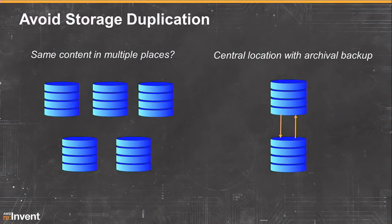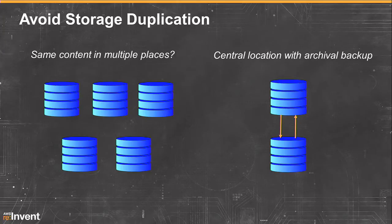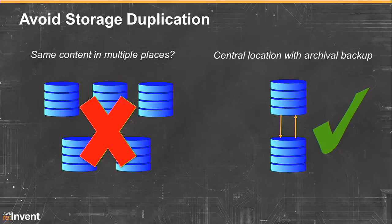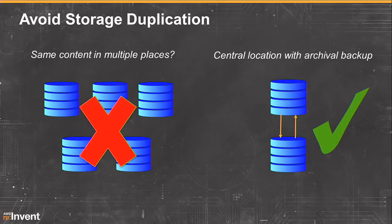A second best practice is to avoid storage duplication if you can. There are great storage sessions here at re:Invent, but if you look at what you can do with S3 and Glacier — using S3 as a central storage location and Glacier for archival storage — this creates a very good combination of very high durability, low cost, and high availability for your centralized storage.